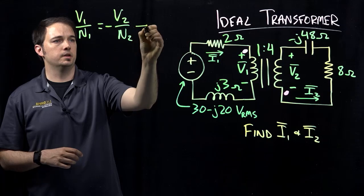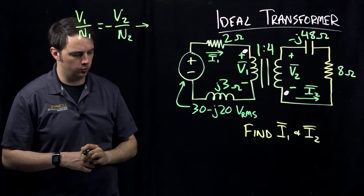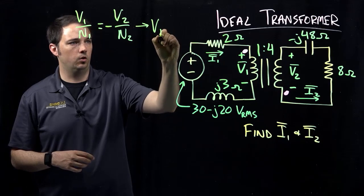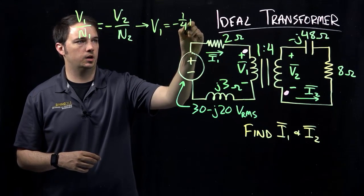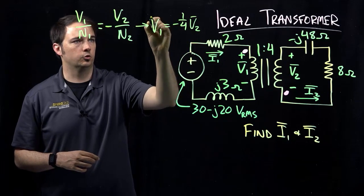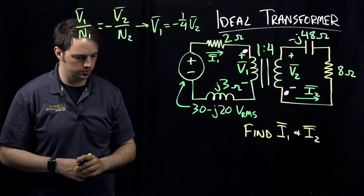Okay, so from this then plugging in our ratio of one to four turns, this would tell me that V1 is equal to negative one over four times V2. Now it should of course be consistent here to say that each of these are phasor values of the voltage.